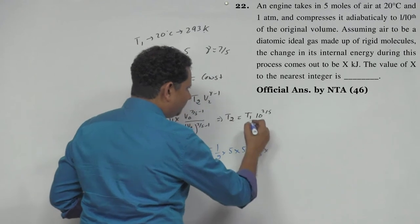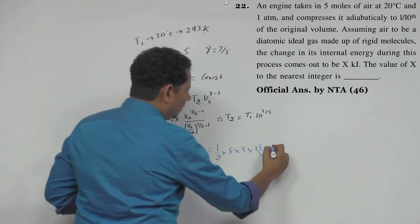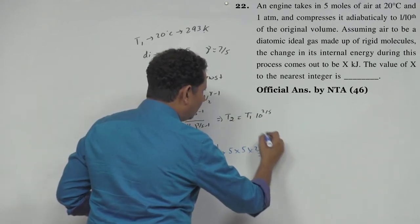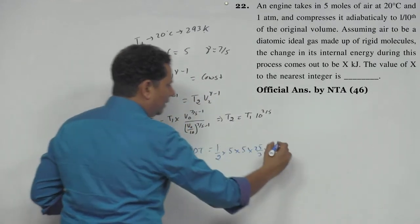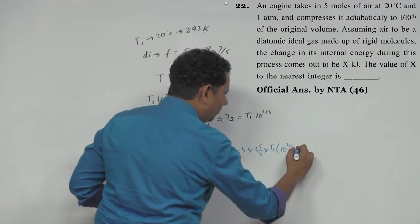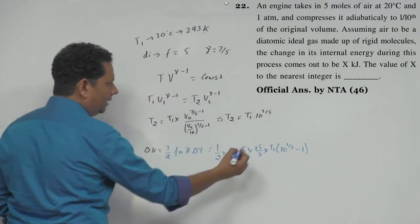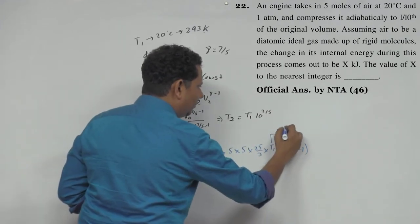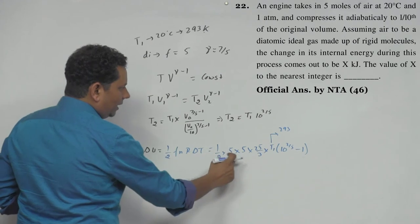Delta T equals T2 - T1, which is T1(10^(2/5) - 1). T1 is 293K, so when we solve this, 5 × 5 × 25 gives 625.